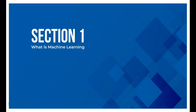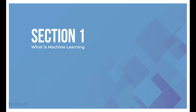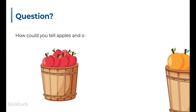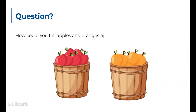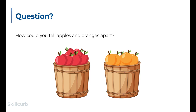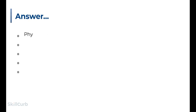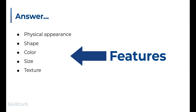Hi and welcome to lecture one of Python machine learning. Before we move on to machine learning, I have a question for you. How could you tell apples and oranges apart? We can tell both apart by their physical appearance, shape, texture, color, size and even taste. All these traits are called features.